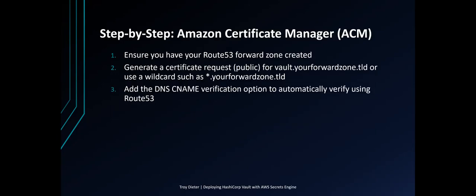Now you want to create a certificate for your forward zone. Ensure that you've already created the Route 53 forward zone. You'll generate a certificate request for 'vault.yourforwardzone.tld', or use a wildcard such as '*.yourforwardzone.tld'. Add the DNS CNAME verification option to automatically verify using Route 53.